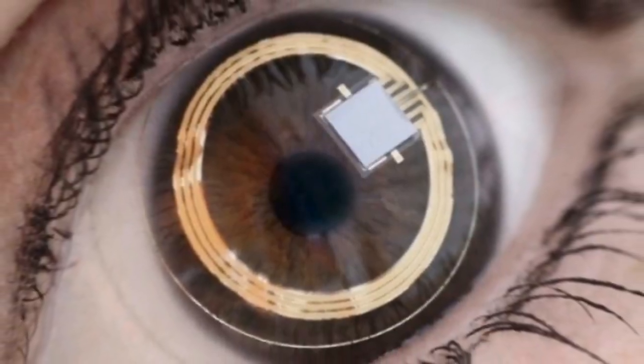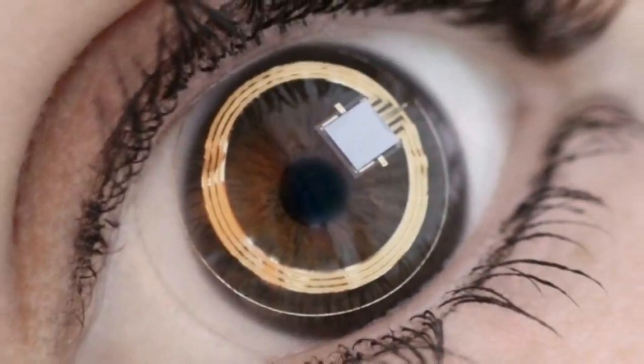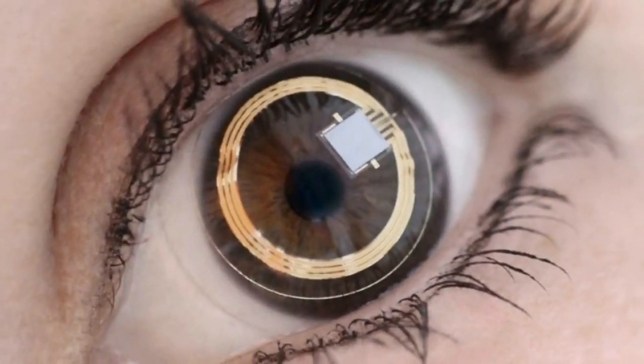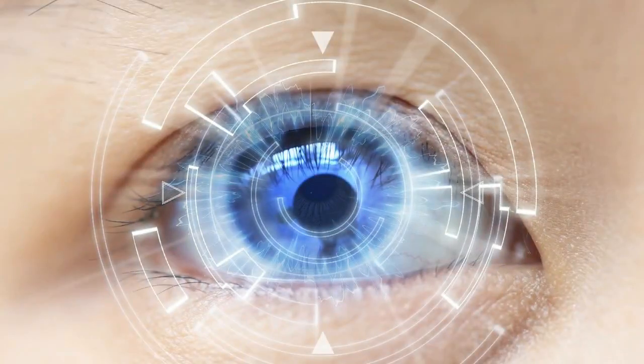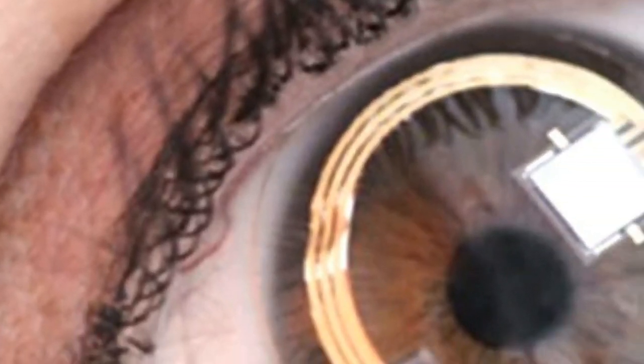The patent describes a pair of lenses that would have a screen, a camera, antenna and various sensors. The sensors would be responsible for detecting movement of the eye and eyelid.